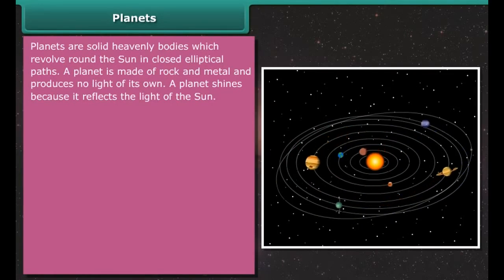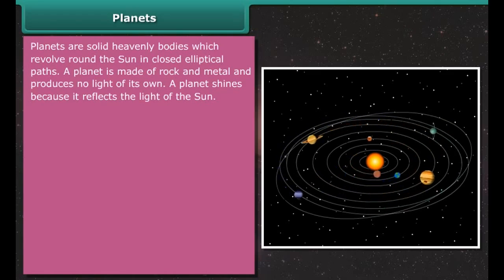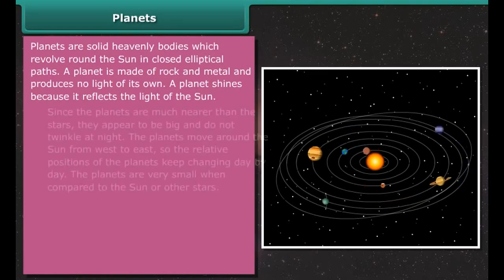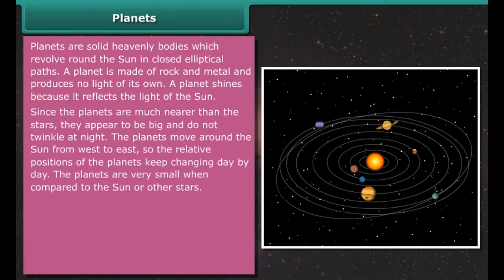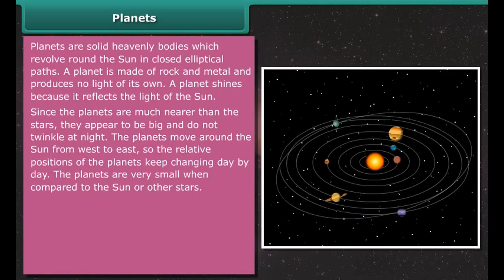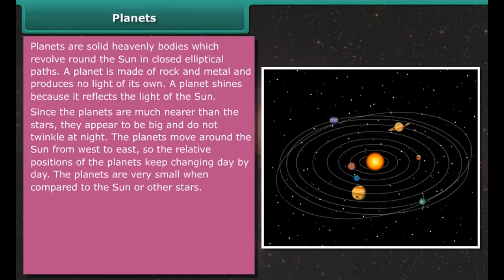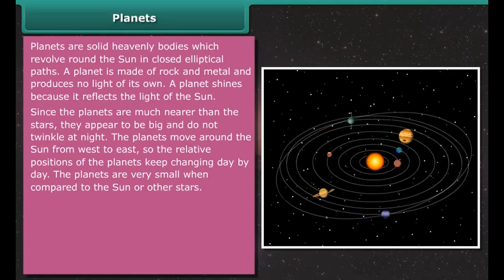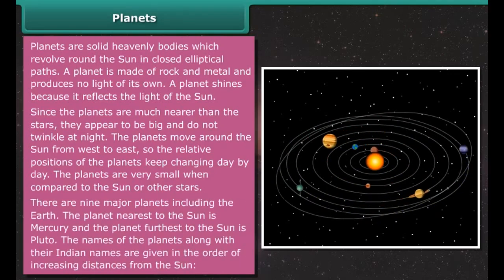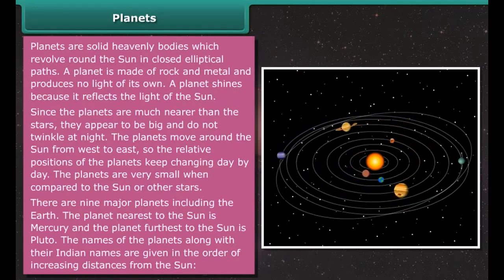The solar system consists of the Sun, the nine planets and their satellites or moons, and thousands of other smaller heavenly bodies such as asteroids, comets, and meteors. The Sun is at the center of the solar system and all these bodies revolve around it. The gravitational pull of the Sun keeps all the planets and other objects revolving around it, so the motion of all members of the solar system is governed mainly by the gravitational force of the Sun.